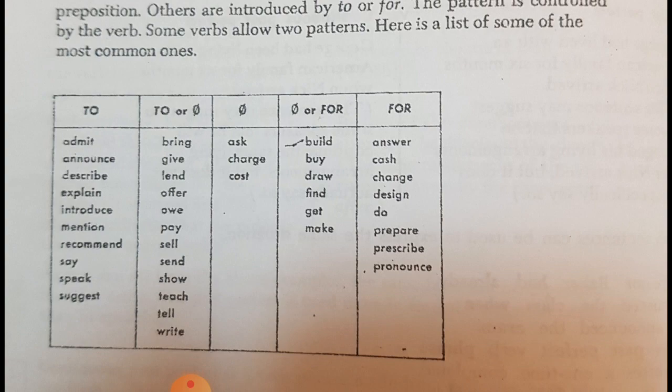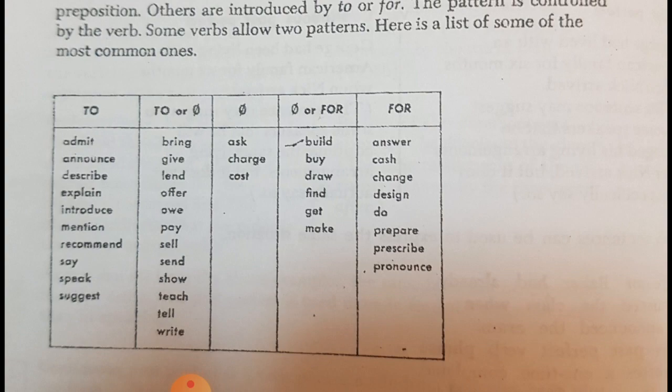On the other hand, some verbs can take FOR or without. For example, you can say I build a house for her, or I build her a house. I buy my son a toy. I buy a toy for my son.